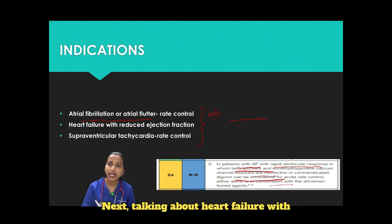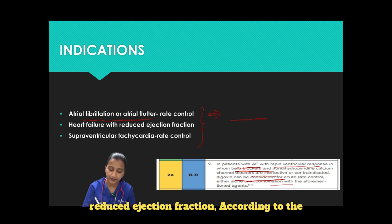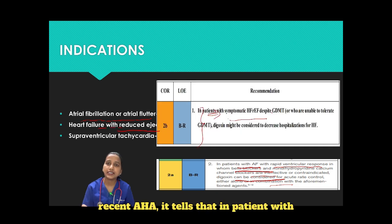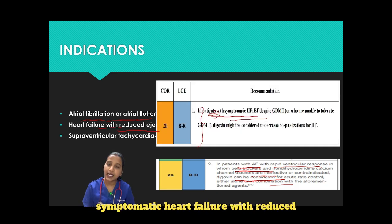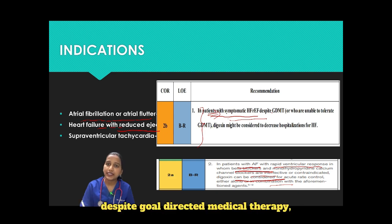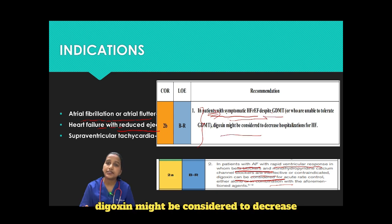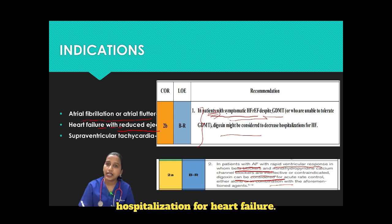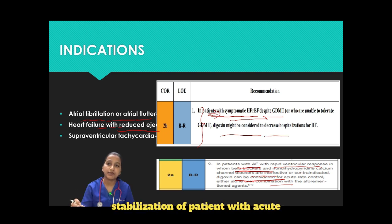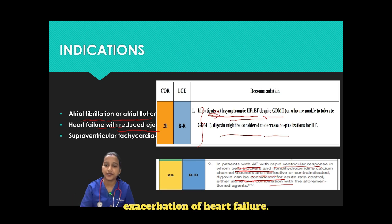Next, talking about heart failure with reduced ejection fraction. According to recent AHA guidelines, in patients with symptomatic heart failure with reduced ejection fraction despite goal-directed medical therapy, digoxin might be considered to decrease hospitalization for heart failure. Digoxin is not indicated for primary stabilization of patients with acute exacerbation of heart failure.